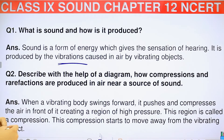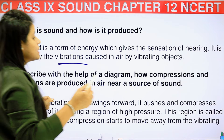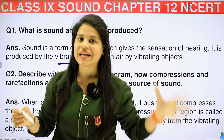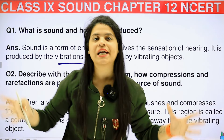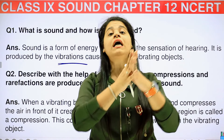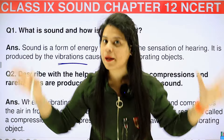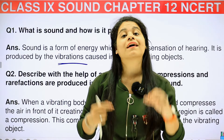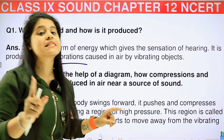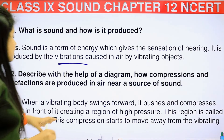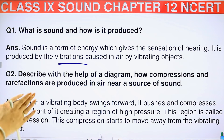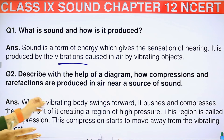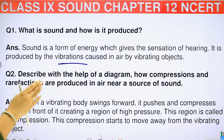Next question: describe with the help of a diagram how compressions and rarefactions are produced in air near a source of sound. If you are only watching back exercises and not watching the chapter notes, please don't do that, because in the notes I explain everything broadly. When a vibrating body swings forward, it pushes and compresses the air in front of it, creating a region of high pressure. This region is called a compression, and it starts to move away from the vibrating object.